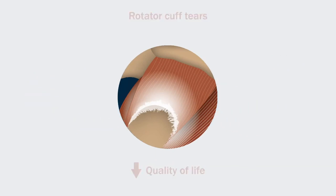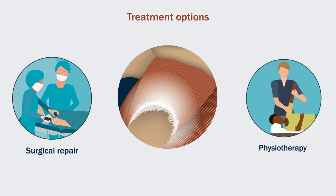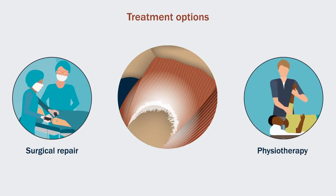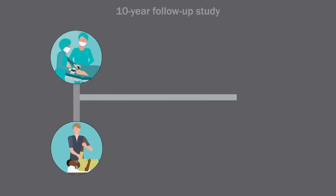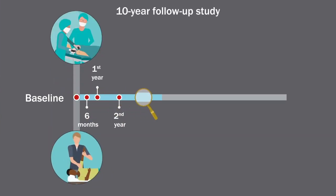Rotator cuff tears can be treated with surgical repair or physiotherapy. Both treatments have been shown to be beneficial, but which is better? As most studies comparing the two treatments were limited to short-term follow-ups, orthopedic researchers in Norway performed a 10-year follow-up study to determine which treatment method has better long-term outcomes.